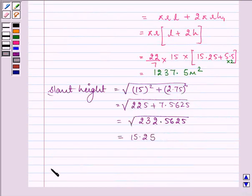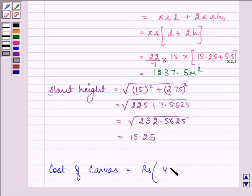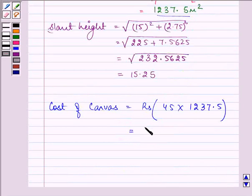Now the cost of canvas is equal to 45 into 1237.5, which is further equal to rupees 55,687.50.